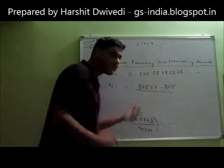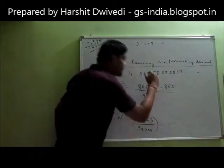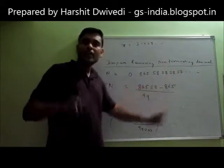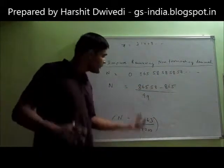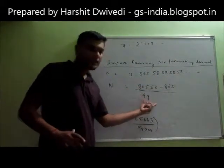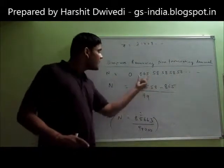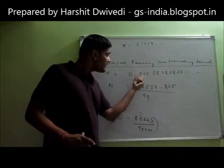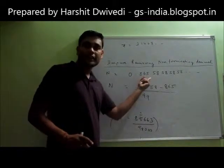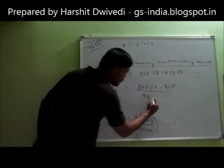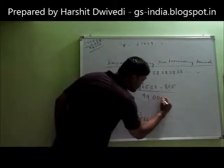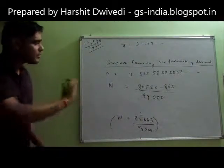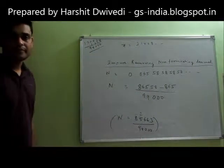Two digits are getting repeated so 2 times 9 — that is 99. After that, how many digits are not getting repeated? 3 digits are not getting repeated, so 3 times 0 — that is 000. So the denominator is 99000. This is the shortcut of doing this thing.